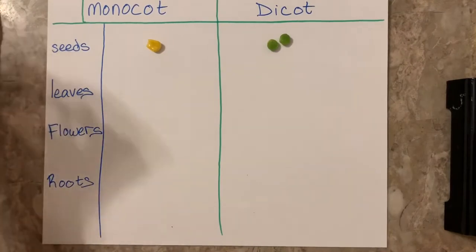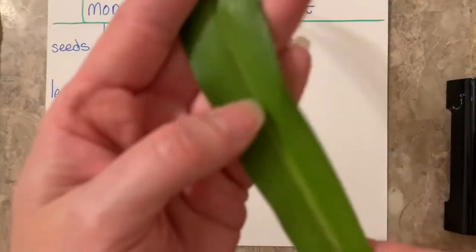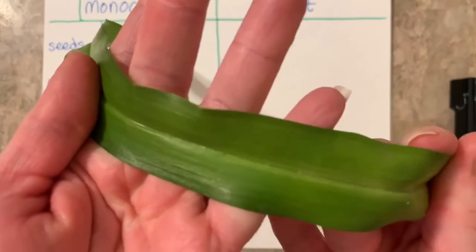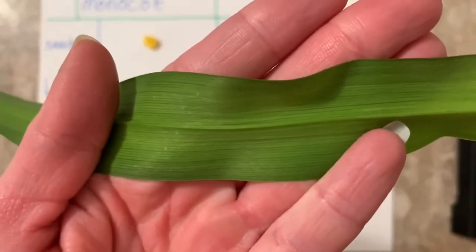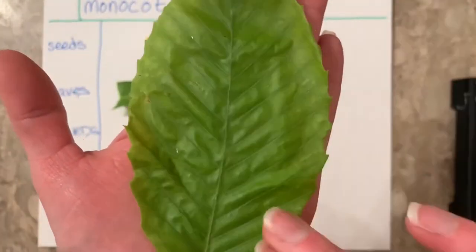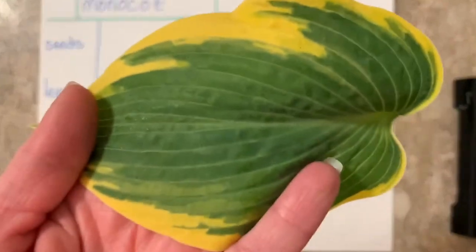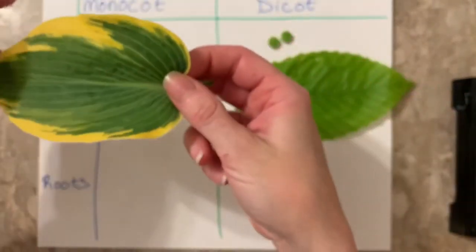Next we have leaves. Monocots have leaves that have parallel veins. So this is a lily leaf — all the veins are parallel to one another, you can kind of see it better on this side. So parallel veins in the leaves. These veins in the leaf are not all parallel to each other. Since they branch out, these are dicots. This is a hosta leaf — see how all the veins are parallel to one another, so this is a monocot.